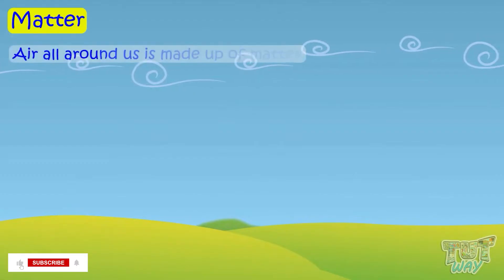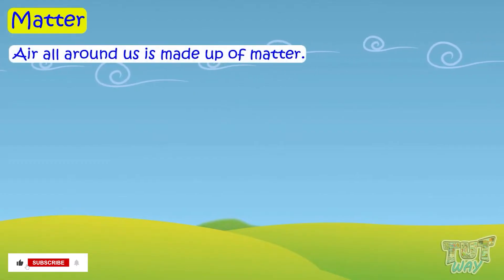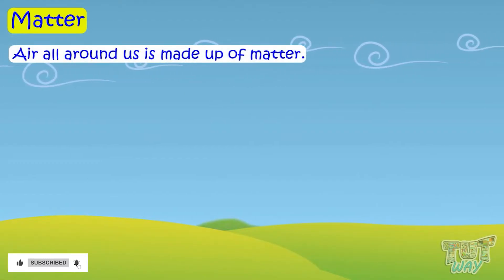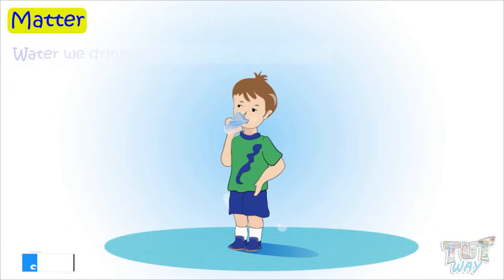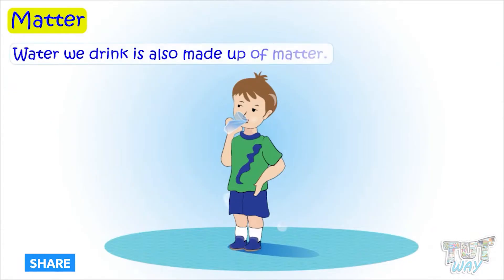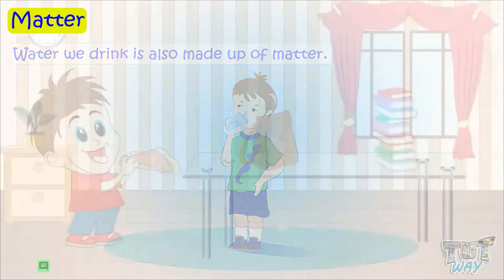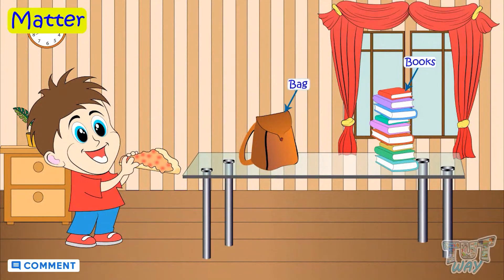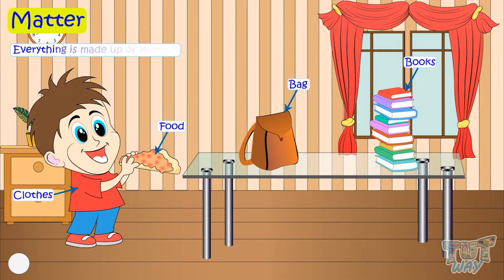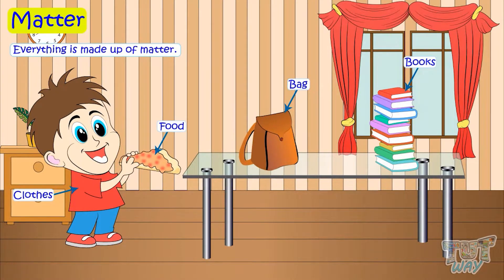Air all around us is made up of matter. Water you drink is also made up of matter. Your books, your bag, food you eat, clothes you wear, are all made up of matter. Or just, everything you see all around is made up of matter.